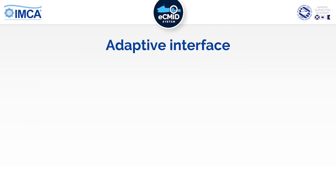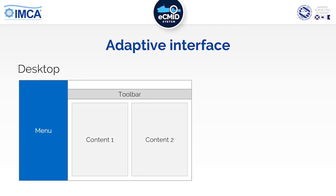The eCMID inspection app has an adaptive interface to give you the best experience no matter what device you're using. On wider screens such as desktop PCs, laptops and larger tablets in landscape format, you'll see the main menu to the left with all the steps in the inspection process. At the top of the main panel is a toolbar that changes depending on which page is being viewed. To reduce scrolling, some content is displayed in columns, side by side.